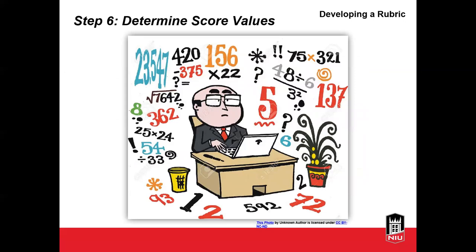When determining score values, I think about all the assignments in the course and how many points I'm going to assign to a particular task based on its importance in the course. Then I go through the task analysis, identify which aspects of each task need to have the most emphasis, put the most points on those key aspects of student performance, and put fewer points on aspects that are important to grade but don't warrant as many points as some other components of the task.